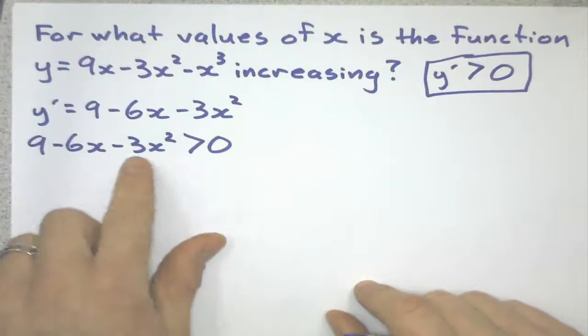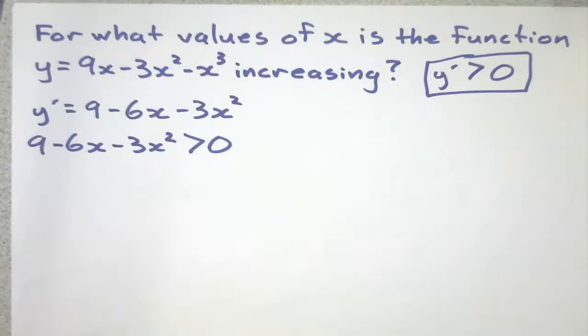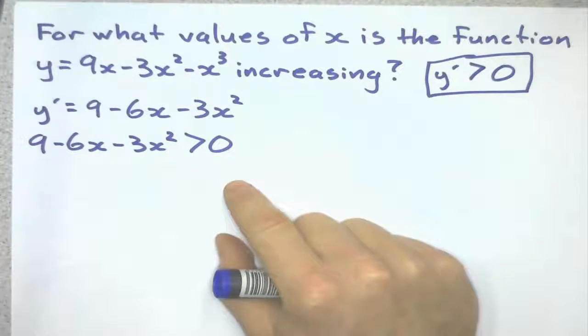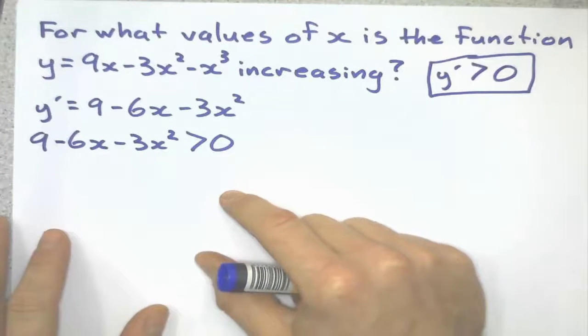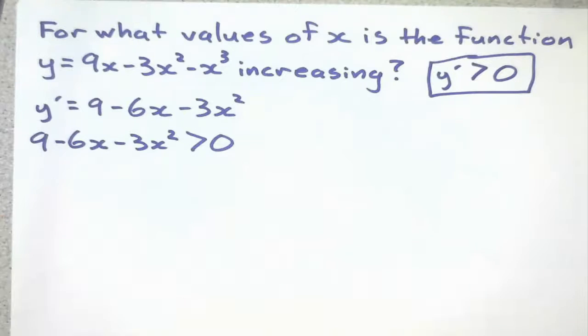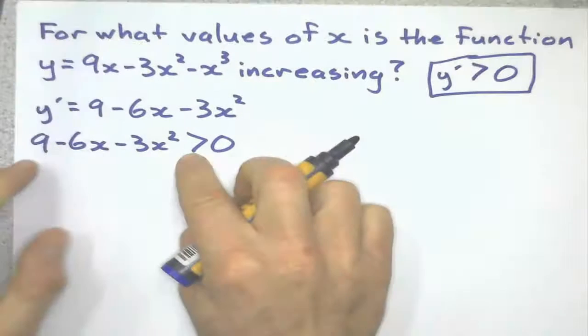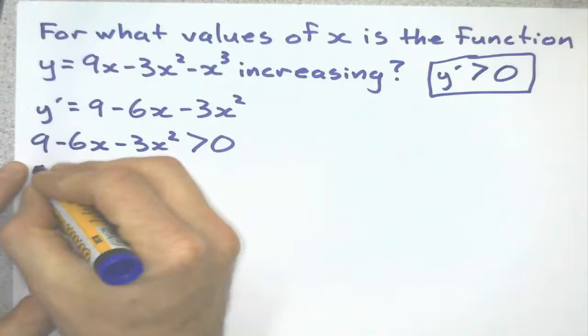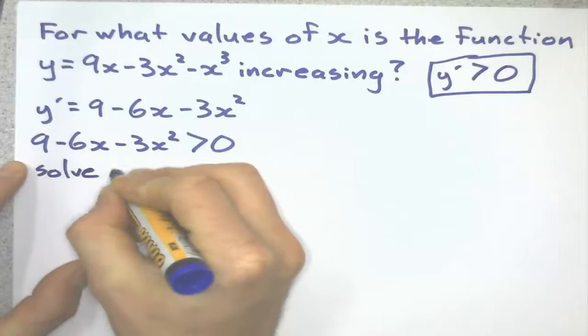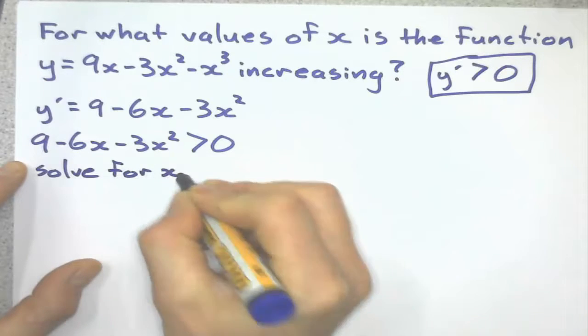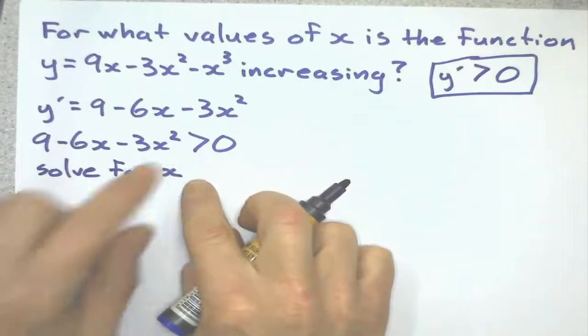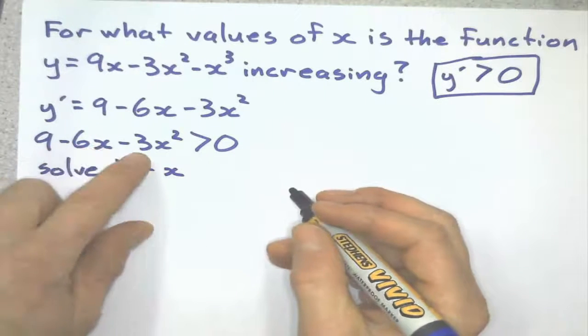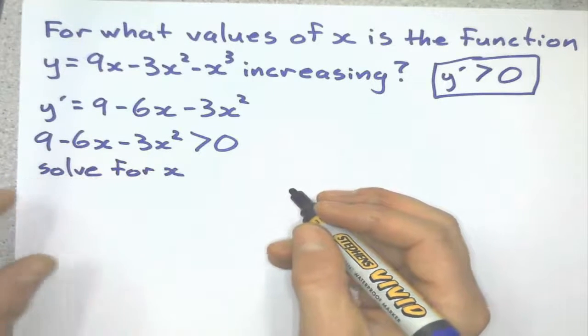Here I set it to greater than zero. How I taught this part is we've got a quadratic equation here. How I teach this is to just solve for x as if it was a quadratic equation equal to zero. Solve for x as if it was 9 minus 6x minus 3x squared equals zero.